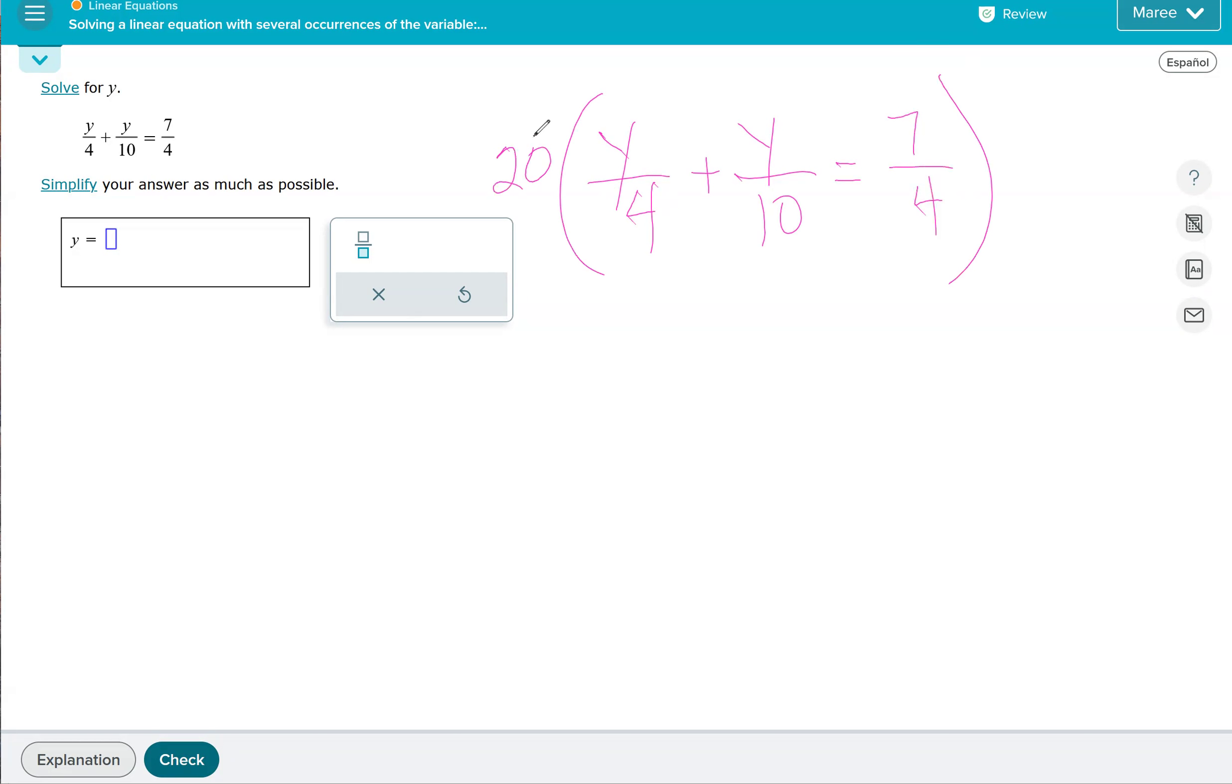We divide 20 by 4 and get 5. 5 times y is 5y. Divide 20 by 10, we get 2 times that by y, we get 2y. Divide 20 by 4, get 5, and 5 times 7 is 35. We combine like terms. They're both on the same side, so 5y plus 2 more y is 7y.